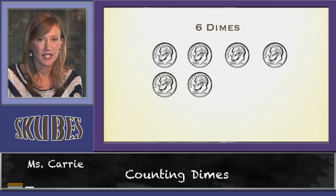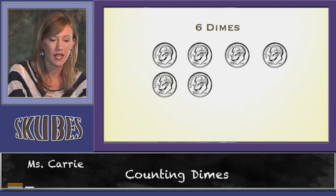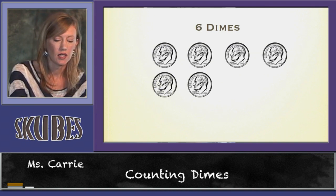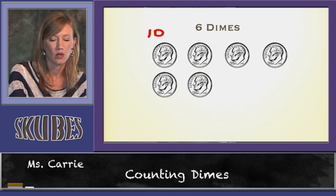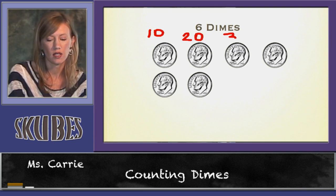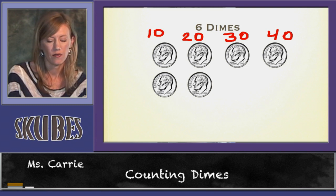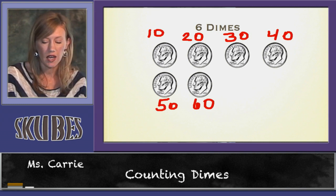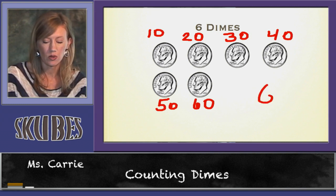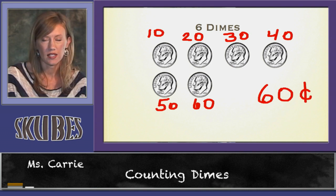Let's look at six dimes. We're going to count by tens: ten, twenty, thirty, forty, fifty, sixty. Six dimes is equal to sixty cents.